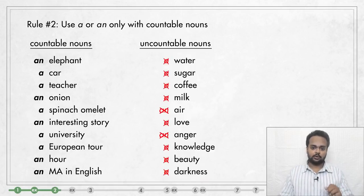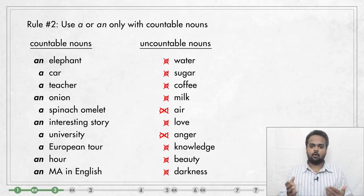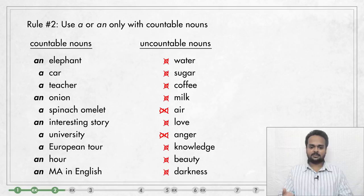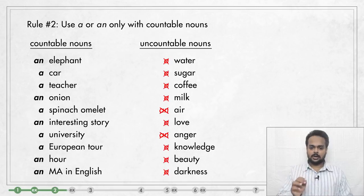Uncountable nouns cannot be counted in this way. Nouns like water, sugar, milk, love, anger, knowledge are some examples. You cannot say I drank four waters or I want eight milks. To a person you can say I love you, but you can't say I have five loves for you — that doesn't make any sense. So these are all uncountable.